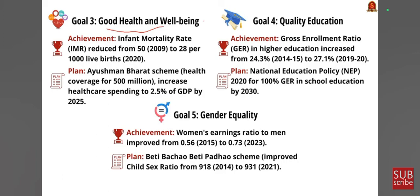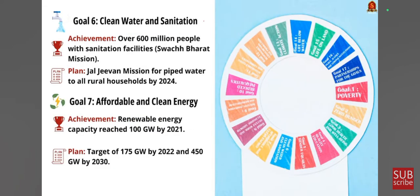Goal 6 — clean water and sanitation: India has achieved sanitation facilities for over 600 million people, majorly due to the Swachh Bharat Mission, and Jal Jeevan Mission aims for piped water to all rural households by 2024. Goal 7 — affordable and clean energy: renewable energy capacity recently reached 100 gigawatts by 2020, with plans for 175 gigawatts by 2022 and 450 gigawatts by 2030. Remembering these goal numbers and associated goals will be very handy for UPSC aspirants in mains and prelims.